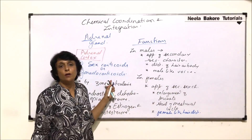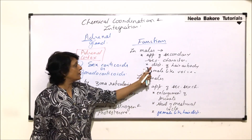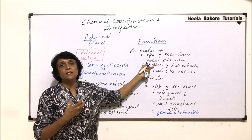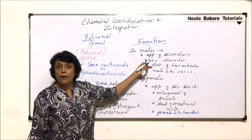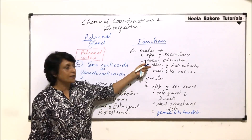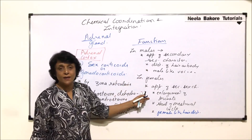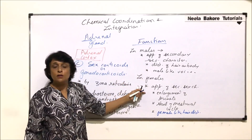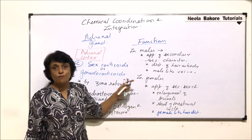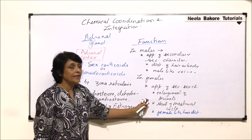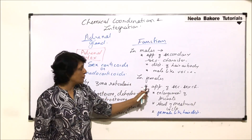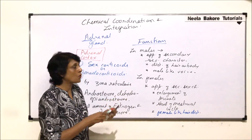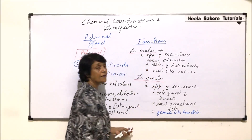In males, sex corticoids stimulate secondary characters like deepening of voice and male-like hair pattern — that means facial hair appears, along with hair on the chest, groin, and armpits. In females, there is no hair on the face and chest, so there is a difference in hair distribution between males and females. In females, the menstrual cycle starts because of these hormones.